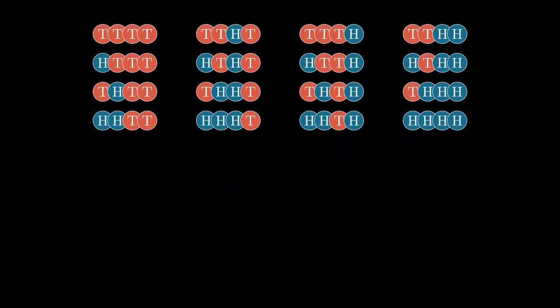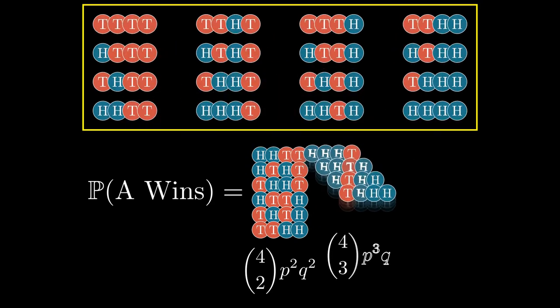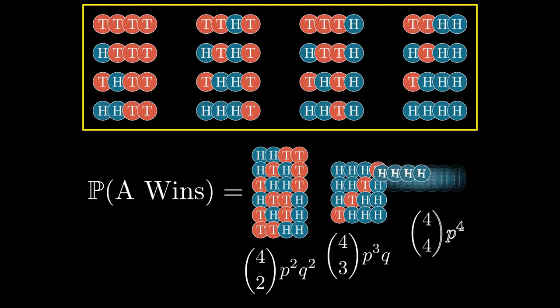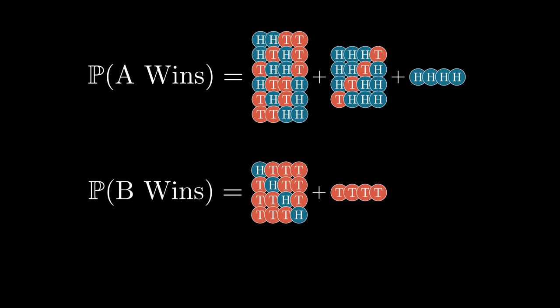The probability of A winning the match is 4C2 P² Q² plus 4C3 P³ Q plus 4C4 P⁴. The same goes for B. The probability of B winning the match is 4C3 Q³ P plus 4C4 Q⁴. It is interesting that even though in some cases we get a clear winner without playing all 4 games, we just assume that the players continue anyway. It's like math appreciating good sportsmanship. Pascal and Fermat concluded that the prize is to be divided based on these probabilities.